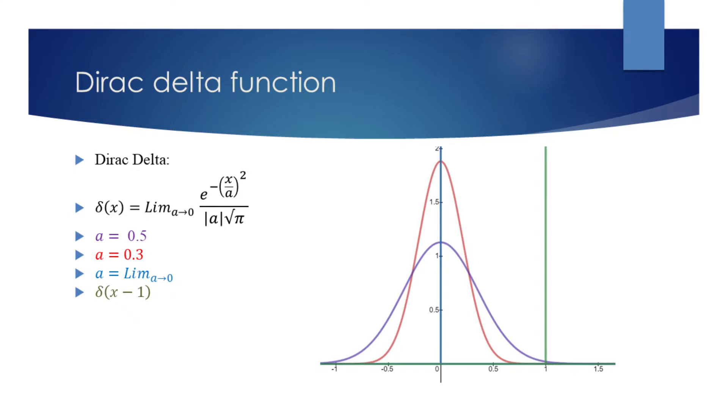Dirac delta function clusters all of the probability mass at x equals 0. The area under the curve of this function equals 1. On the slide, we can see that this function is defined as a is approaching 0.